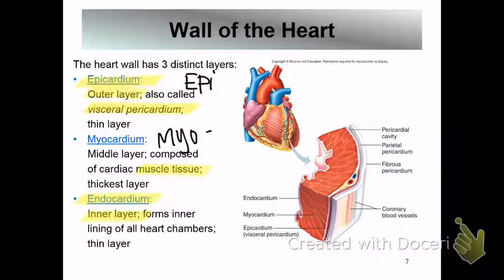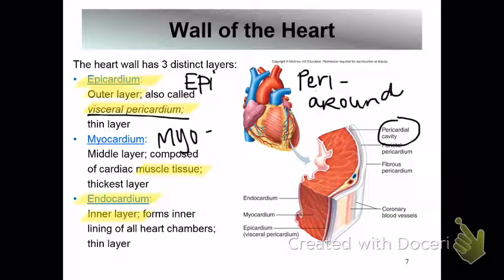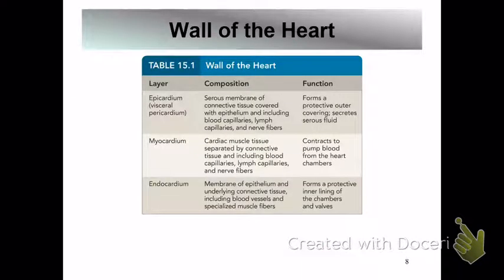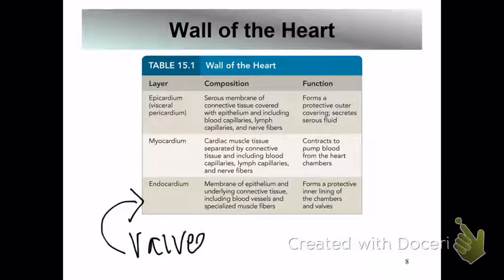All three of these layers together are called the pericardium — PERI means around. The visceral pericardium touches the outside of the heart and has a serous membrane underneath it — an oily, slippery substance — so that when the heart pumps, the tissue is lubricated and doesn't create friction. The endocardium forms the protective inner lining of the chambers and valves.